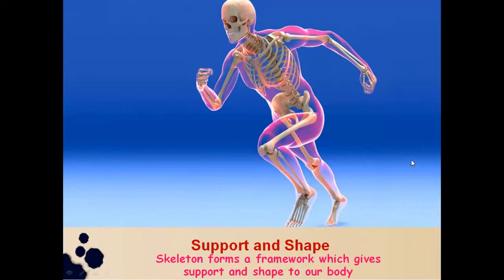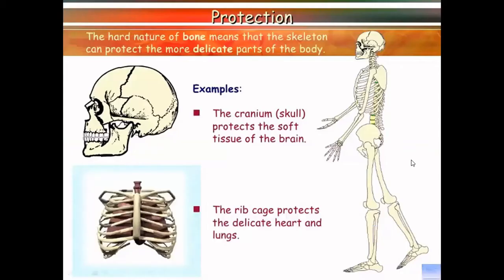First, the endoskeleton provides support and shape. It forms a framework which gives support and a definite shape to the body. Without the bones of our skeleton, we would be a blob of soft tissue. Second, protection: the skeleton protects vital and delicate organs — for example, the skull protects the brain, and the rib cage protects the heart and lungs.